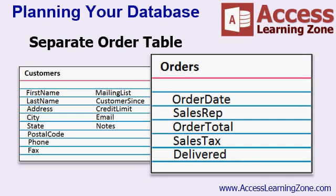Likewise, you don't want to have data regarding your customers in your order table. There are some exceptions, and we'll talk about those in future classes. But generally, the order table should have all order information. If this seems a little confusing, don't worry about it — we're actually not going to work with multiple tables until we get into the expert series. For now, I just want you to recognize that different types of information in your database will go into their own tables. For today's class, we're going to focus solely on the customer table, but later on we'll add additional tables like contacts, employees, and eventually orders.